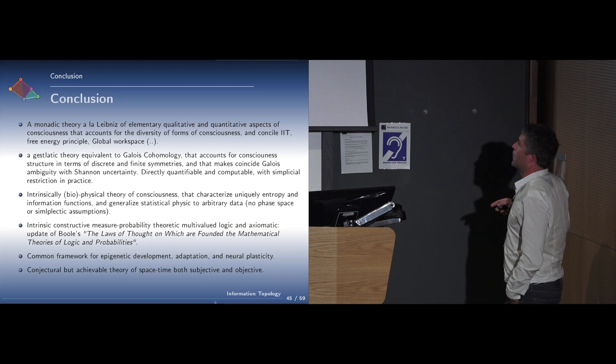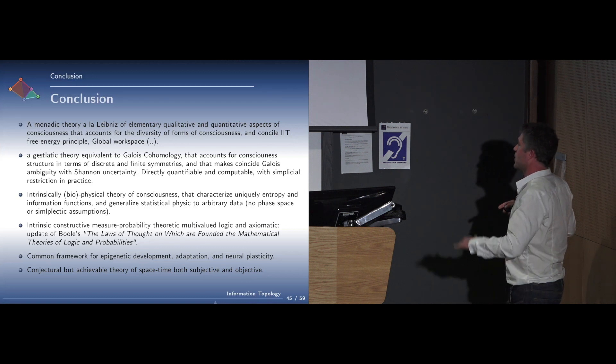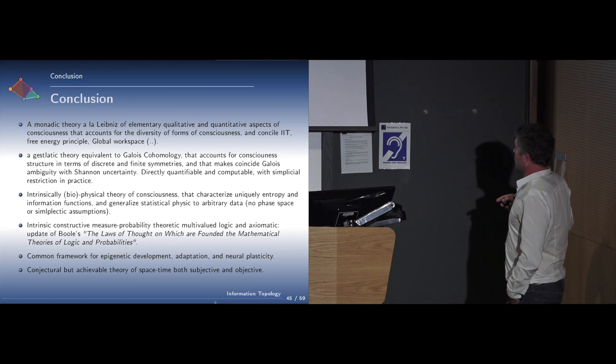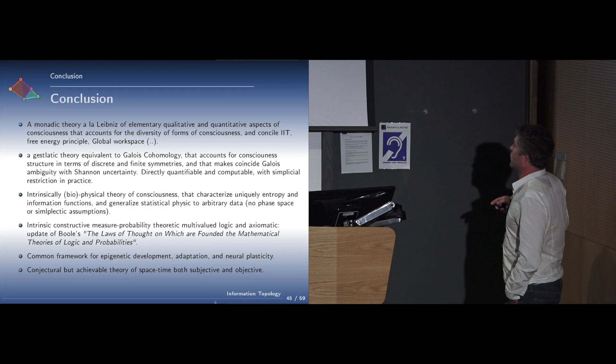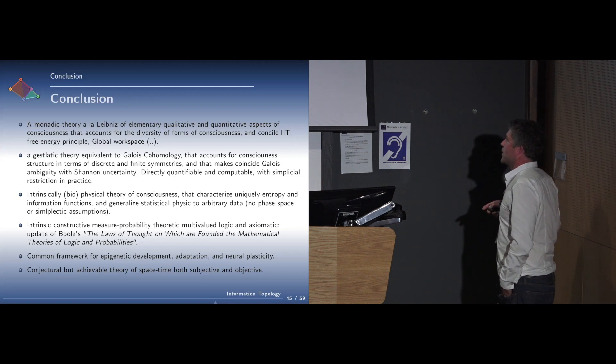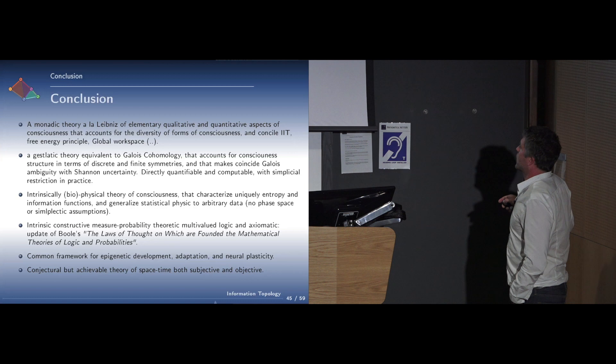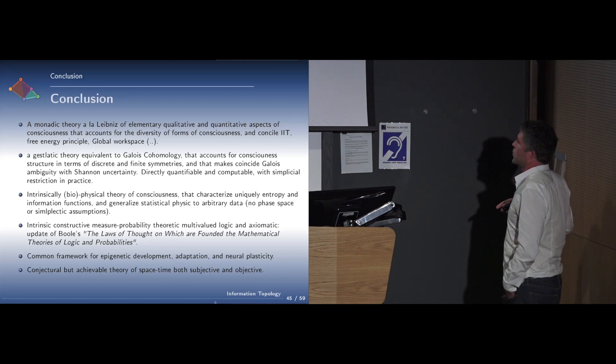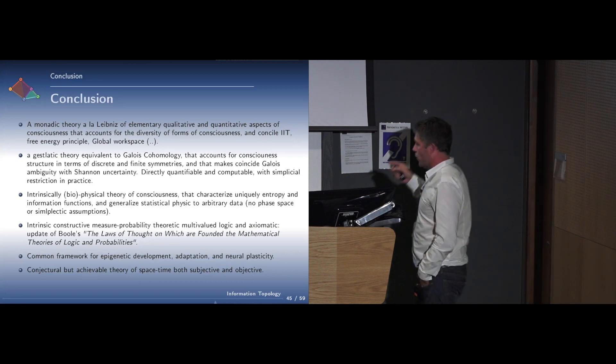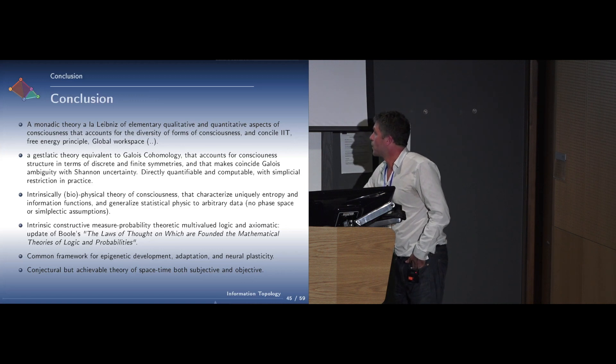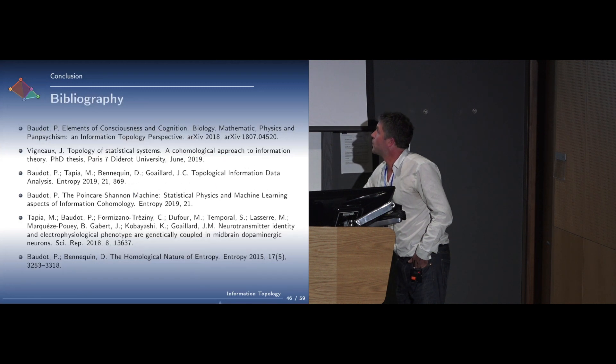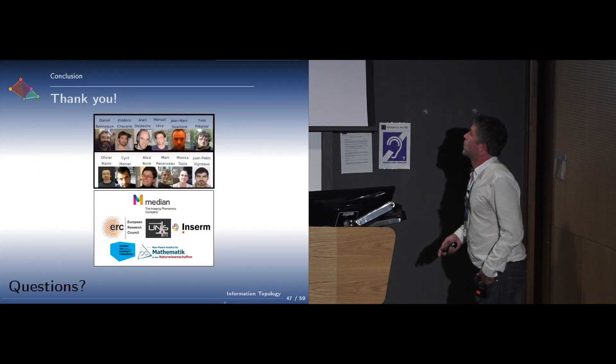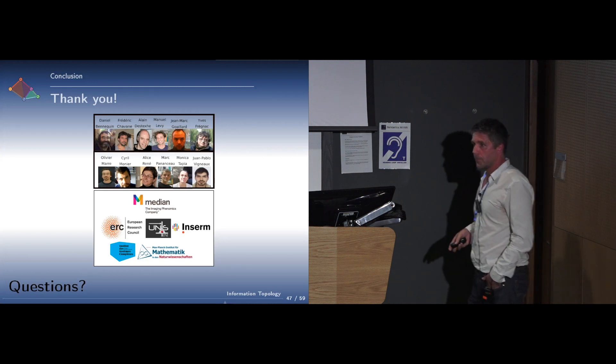I didn't present the information as a long history of quantification in neural systems and below neural systems, even at the molecular level. This generalizes statistical physics to arbitrary data, meaning we don't need phase space or symplectic assumptions. There is a logic which is in the spirit of Boole, the laws of thought on which are founded the mathematical theories of logic and probabilities. We can try to think about space-time, how we can make it for space-time. Here are the references of the work, and I thank all the collaborators and everybody. Any questions? Thank you.